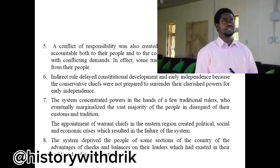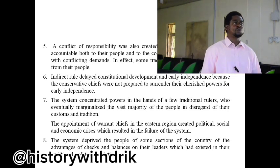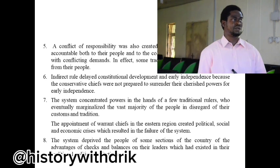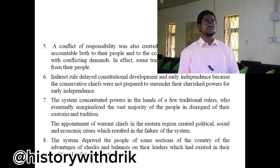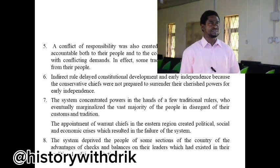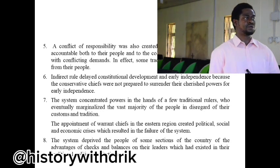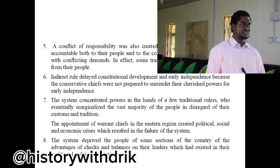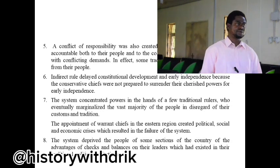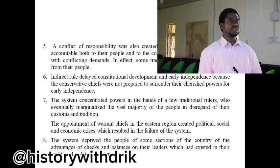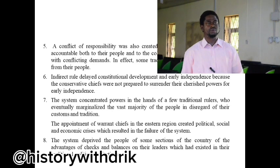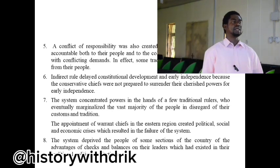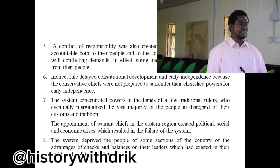Point number six: indirect rule delayed constitutional development and early independence because the conservative chiefs were not prepared to surrender their cherished powers for early independence. Point number seven: the system concentrated powers in the hands of a few traditional rulers who eventually marginalized the vast majority of the people in disregard of their customs and traditions. The appointment of warrant chiefs in the eastern region created political, social, and economic crisis which resulted in the failure of the system.